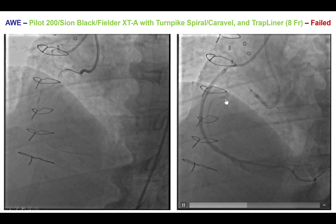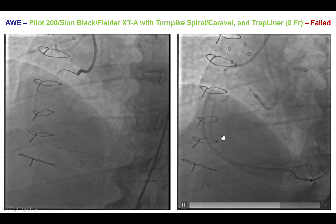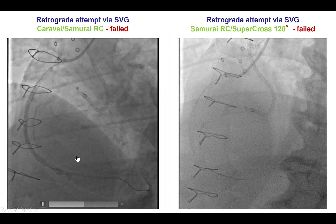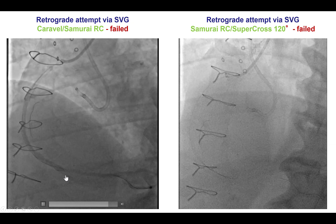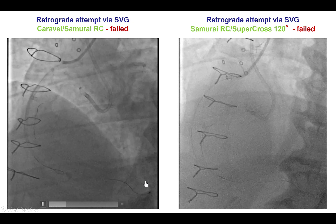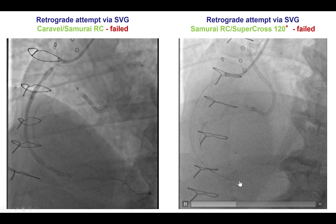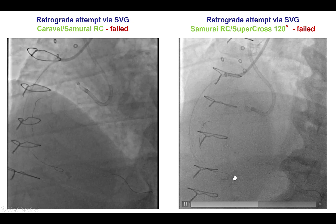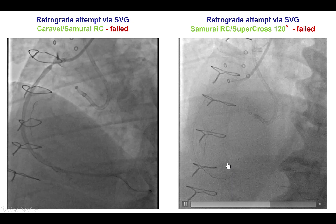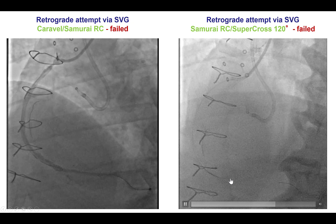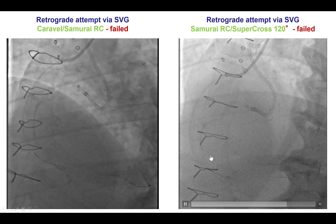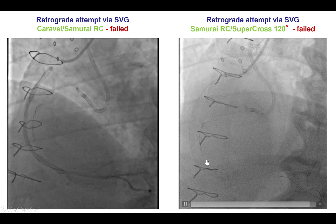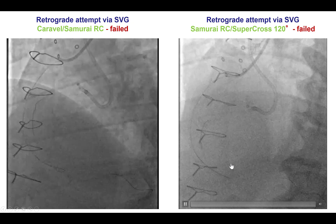Unfortunately, there was severe calcification and antegrade wire escalation failed. A retrograde attempt was subsequently performed; however, due to the lack of a clear-cut distal stump, it was not possible to advance retrograde equipment into the native right coronary artery, despite using an angulated SuperCross 120 microcatheter.